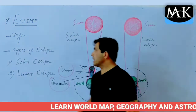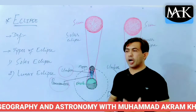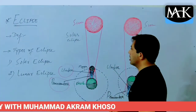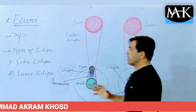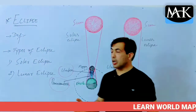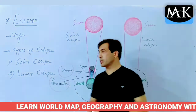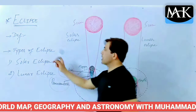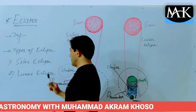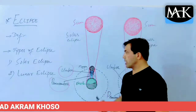Eclipse is the disappearance or obscuring of a heavenly body, particularly of the sun or the moon. When there is darkness or disappearance of the sun or the moon, that phenomenon is known as eclipse. There are two types of eclipse: solar eclipse and lunar eclipse.